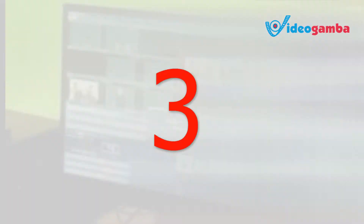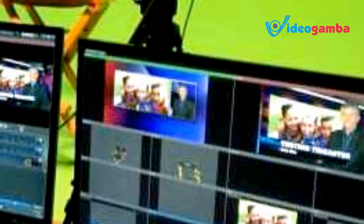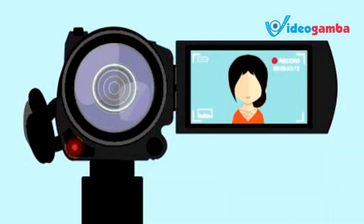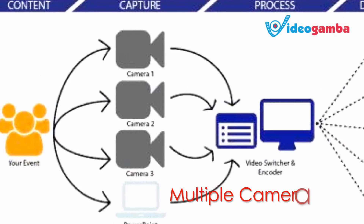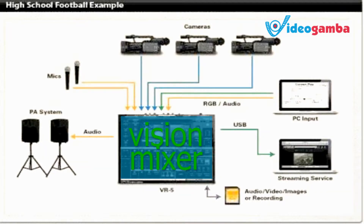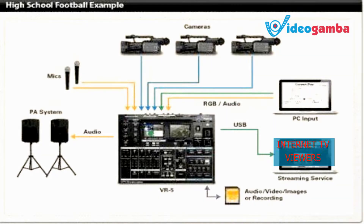Thirdly, you can set up your studio just like a normal TV station in case you want to be doing live streaming. Your camera — or multiple cameras — will capture your content. If you're using more than one camera, you'll need a vision mixer where you input all your camera sources and only one output will feed your internet TV viewers.